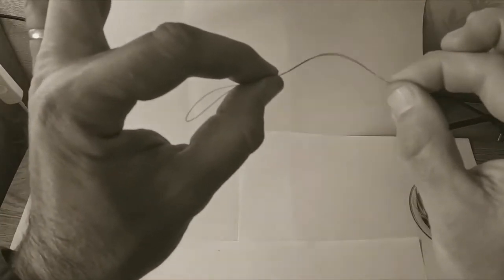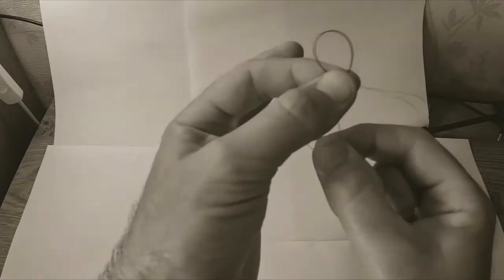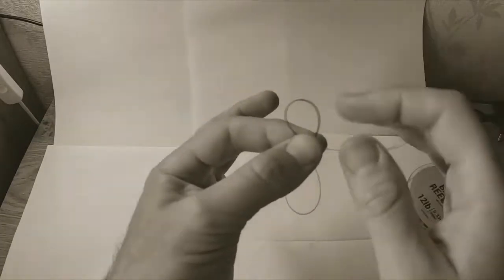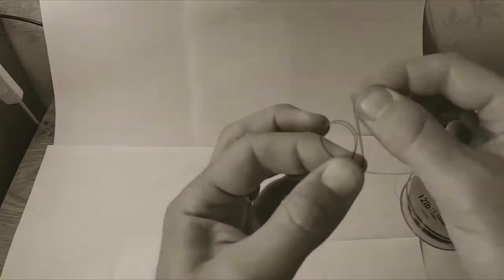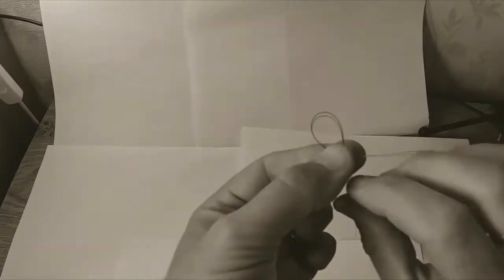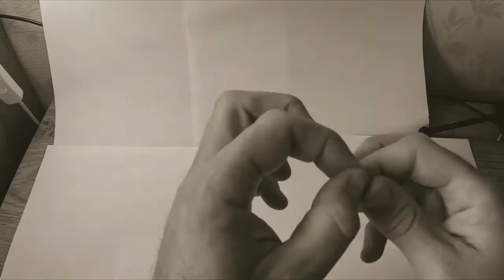By just making a simple loop there, what I'm then going to do is just find this little tag end. What we're going to do is we're now going to make another loop. So you can see there's my original loop and there's this new one that I've made. Now we're going to take that original loop over the top, over the back, and then through the original loop that we made.